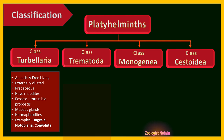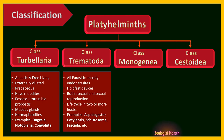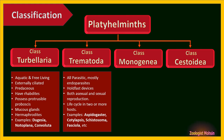Class Trematoda: all are parasitic, mostly endoparasites. They have holdfast devices to attach to the host or substrate. They possess both sexual and asexual reproduction in the life cycle, and the life cycle completes in two or more hosts. Examples include Aspidogaster, Cotylaspis, Schistosoma, and Fasciola hepatica.